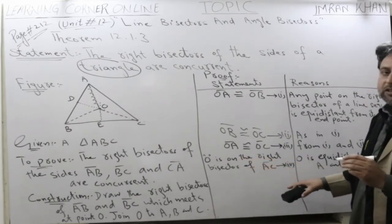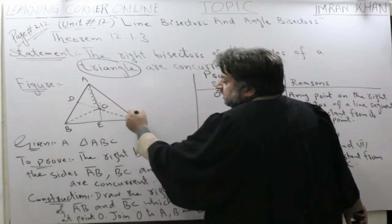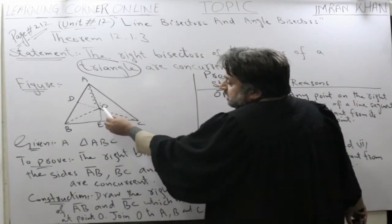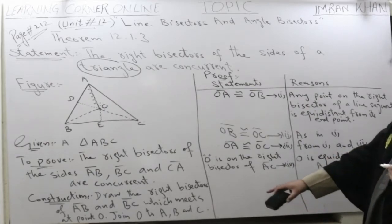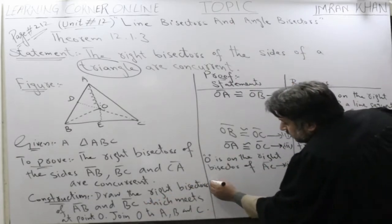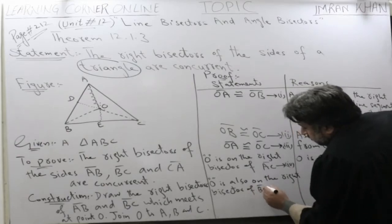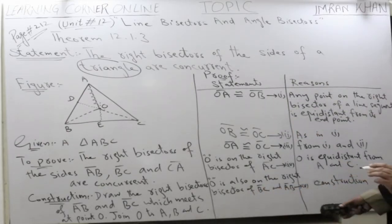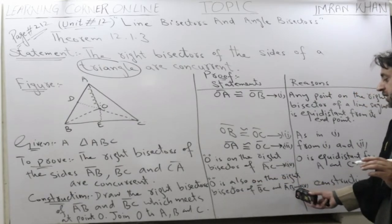When we draw the right bisector of AC, then it means that O lies on that bisector. Already, we know that O is on the right bisector of AB and BC. From construction, we know that O is also on the right bisector of BC and AB.